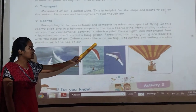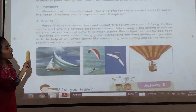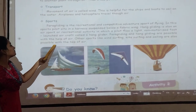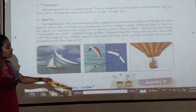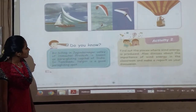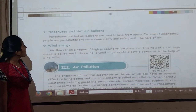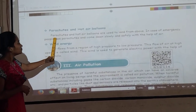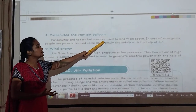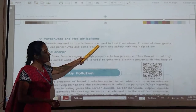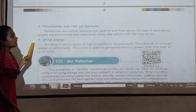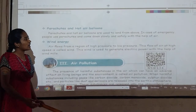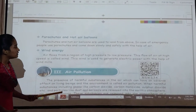Other sports like wind surfing and kite surfing — in these sports, sailing is also possible with the help of air. Parachutes and hot air balloons are used to land from above. In case of emergency, people use parachutes and come down slowly and safely with the help of air.